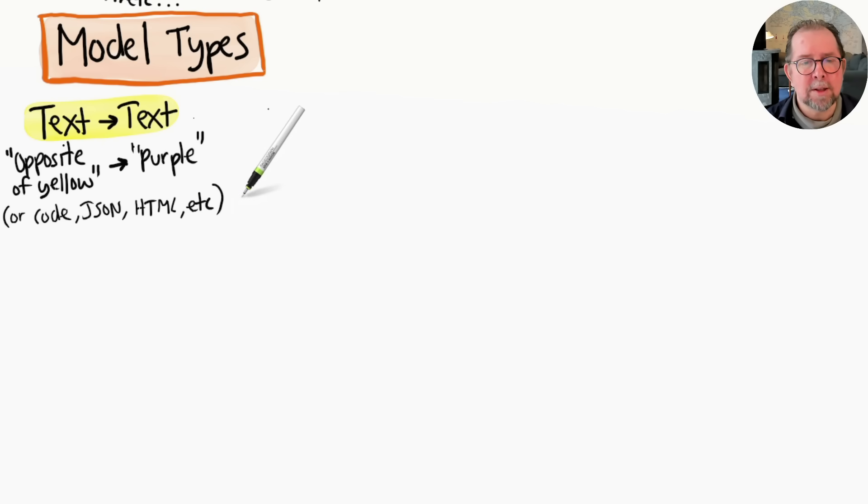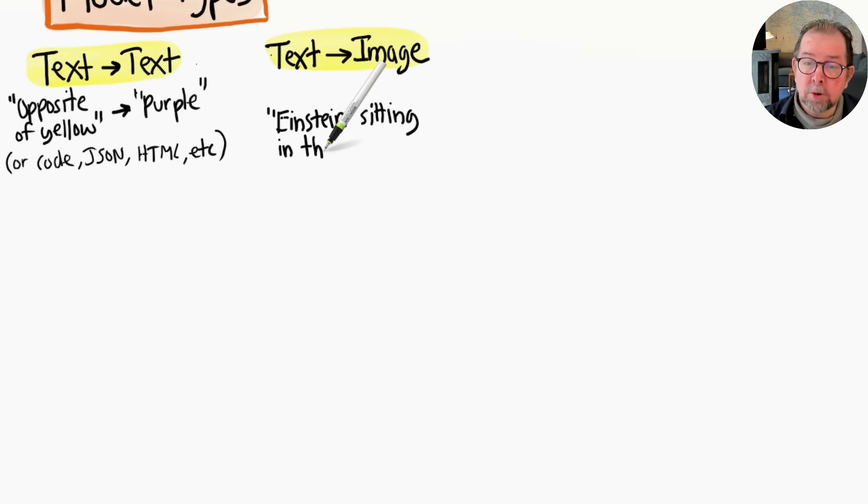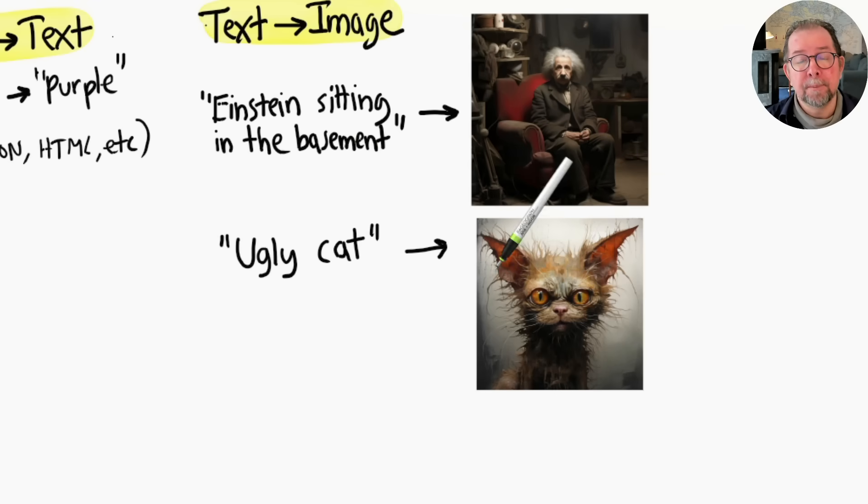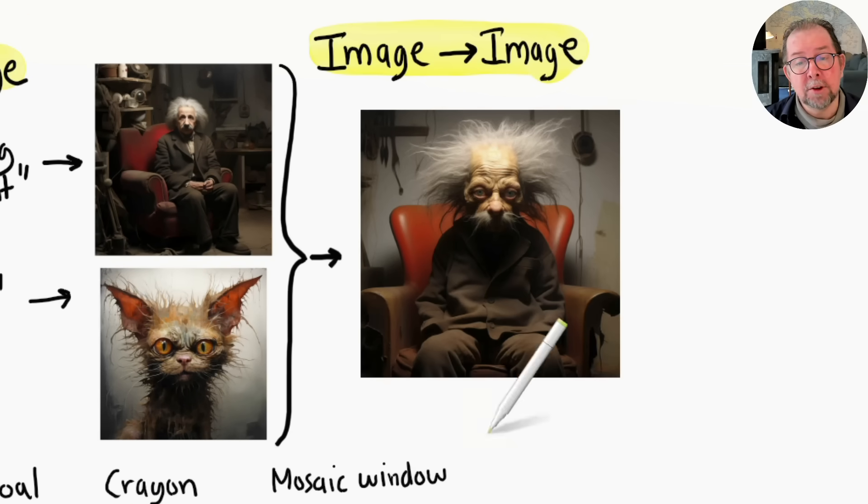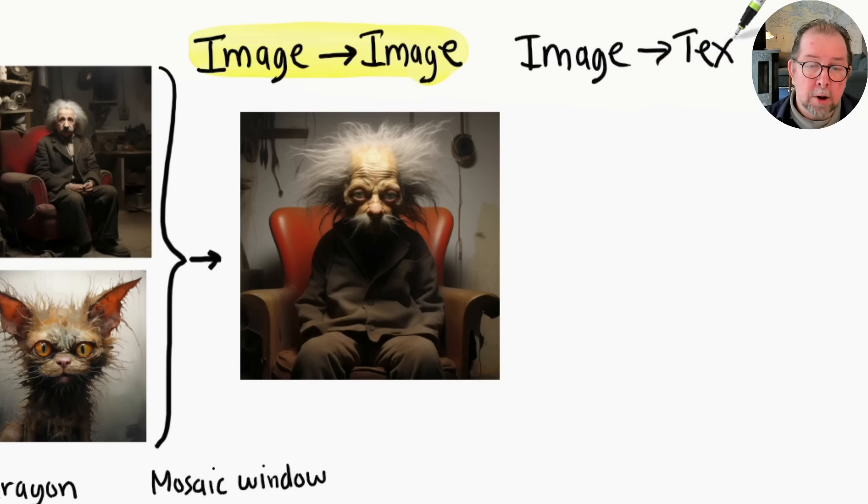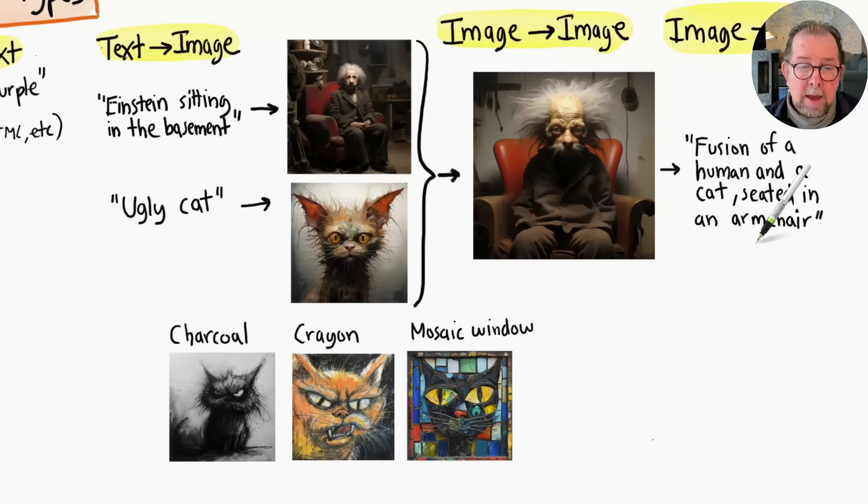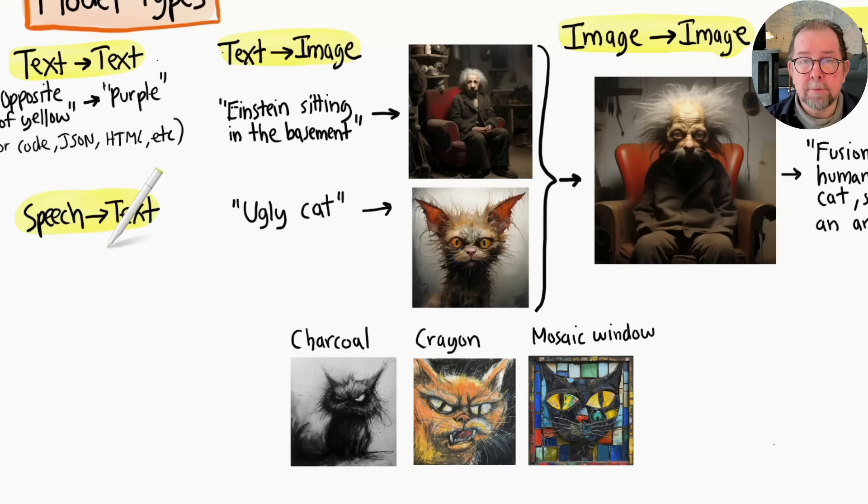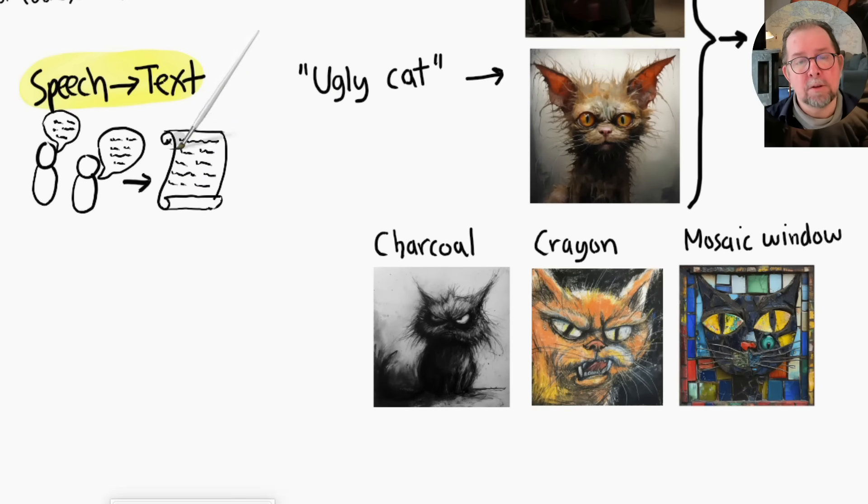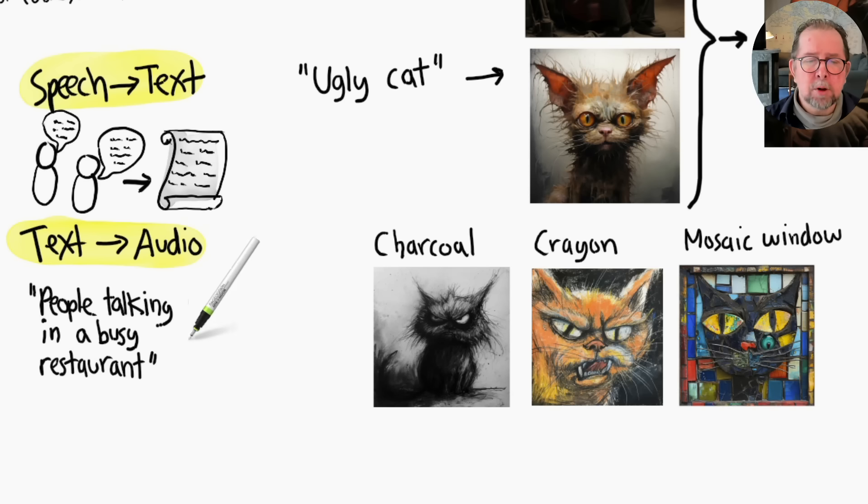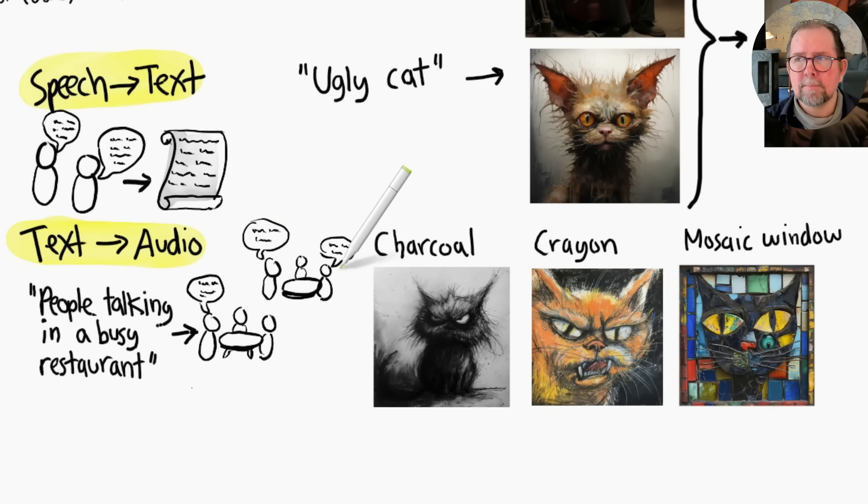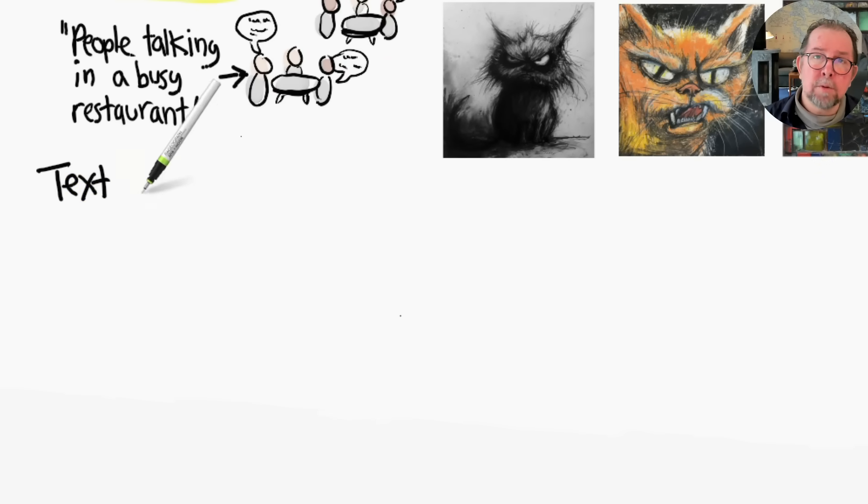Text-to-image models will generate images—describe what you want and an image gets generated for you. You can even pick a style. Image-to-image models can do things like transforming or combining images. And we have image-to-text models which describe the contents of a given image. Speech-to-text models create voice transcriptions, which is useful for things like meeting notes. Text-to-audio models generate music or sounds from a prompt. For example, here is some sound generated from the prompt 'people talking in a busy restaurant.' [sound plays] Okay guys, enough, let's talk now, thank you.